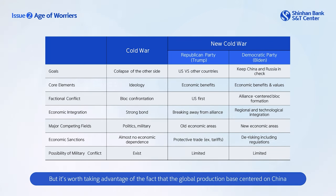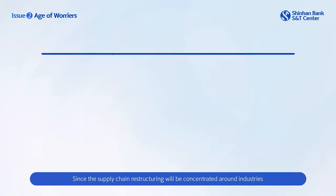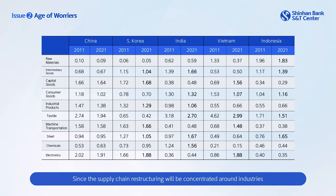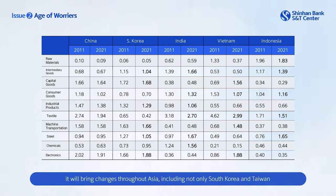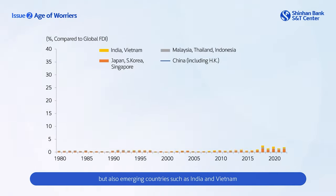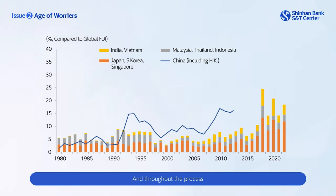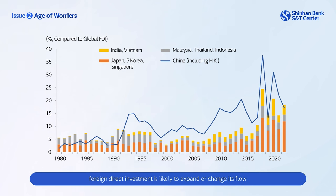It's worth noting that the global production base centered on China can be restructured regardless of the outcome of the U.S. presidential election. Since the supply chain restructuring will be concentrated around industries that have export advantages on a country-by-country basis, it will bring changes throughout Asia, including not only South Korea and Taiwan but also emerging countries such as India and Vietnam. Throughout the process, foreign direct investment is likely to expand or change its flow, having an effect on the foreign exchange market.